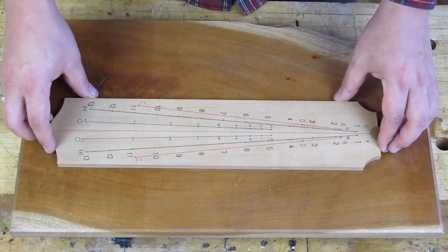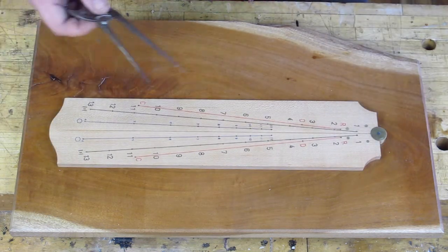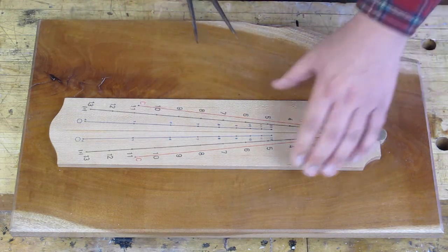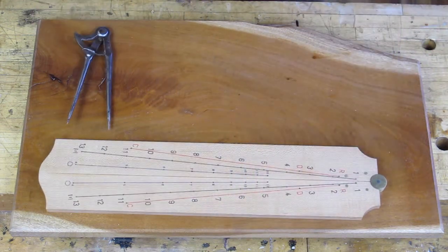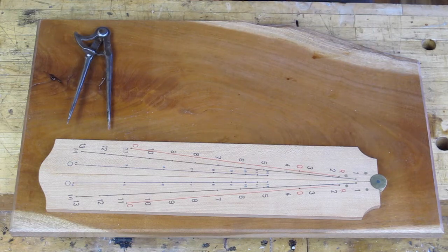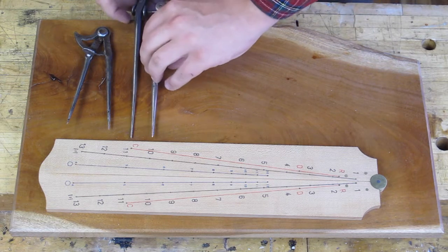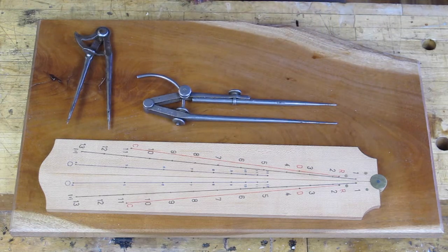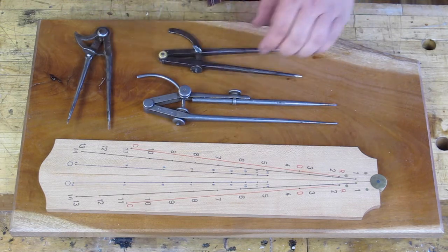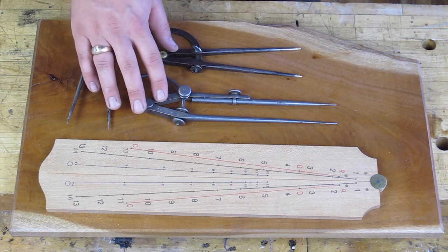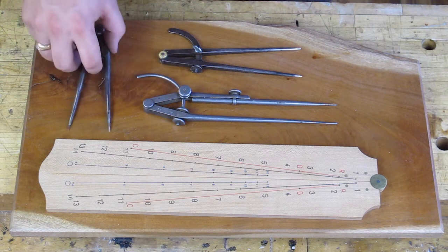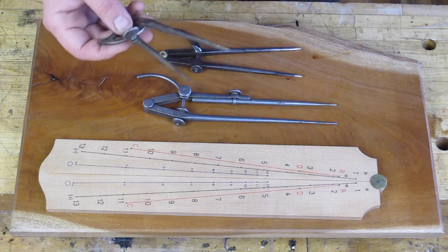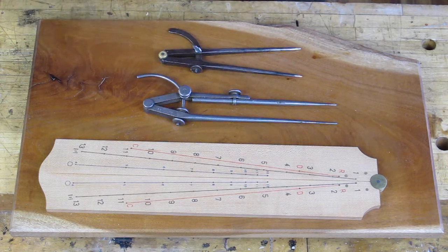It's used in concert with dividers. I've got a number of dividers here. I like dividers especially when drafting or working with finer measurements that have a micro-adjust, which you can see these two do. This one doesn't, but I've also got some uses for some non-adjustable dividers that I'm going to show in a little bit.